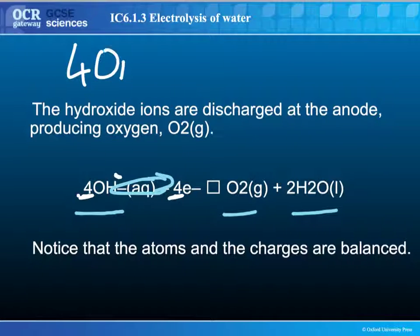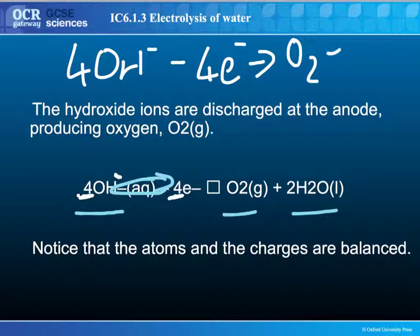Four hydroxide ions take away four electrons gives you your oxygen gas, which is the one that you're concerned about, and the leftover water, not forgetting to put the two in.